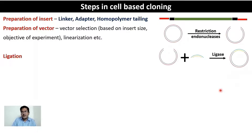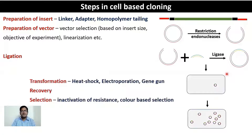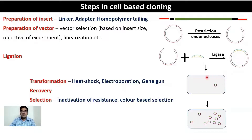Once the ligation is successful, you have a recombinant vector that must be forced into the host cell. Methods for ensuring the recombinant vector enters the host cell include heat shock, electroporation, and gene gun. This transformation process brings the recombinant vector into the host cell. However, it could also be a non-recombinant vector that enters, so the vector must have strategies to select host cells containing recombinant vector.